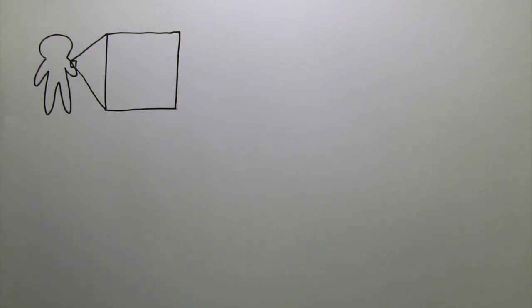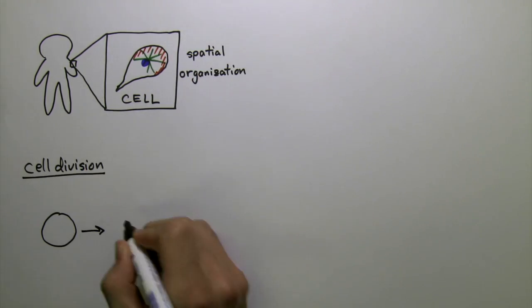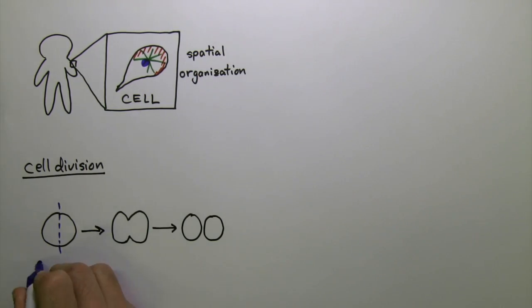The cell is the basic unit of life, and all cells must be spatially organized. For example, for a cell to divide, it must find its center.